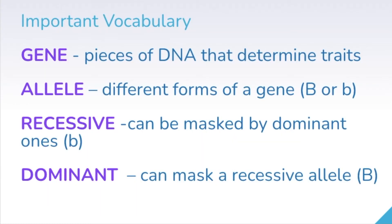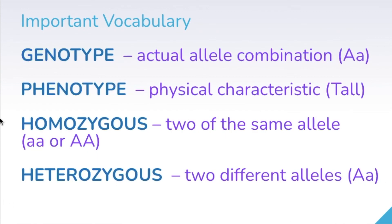Now let's make sure we get through some important vocabulary that you're going to be seeing over and over again in genetics. A lot of genetics is vocabulary, so make sure you record these words and their definitions in your notes. A gene is a piece of DNA that determines your traits. An allele is just a different form of a gene — this might be written as a big B or a little b, for example. A recessive gene can be masked by a dominant one, and a dominant allele can mask a recessive one. Dominant alleles are often represented by capital letters.